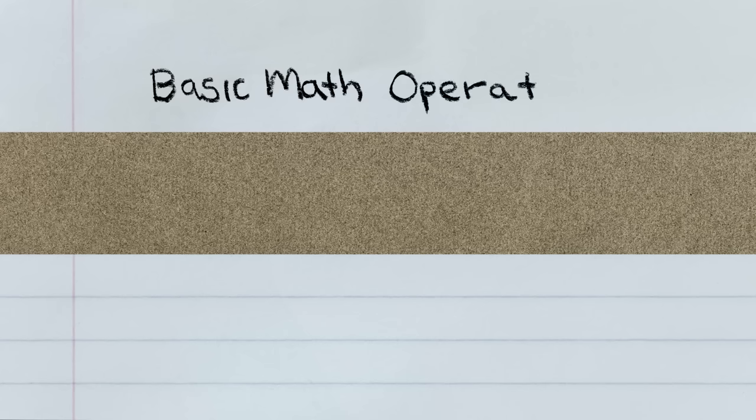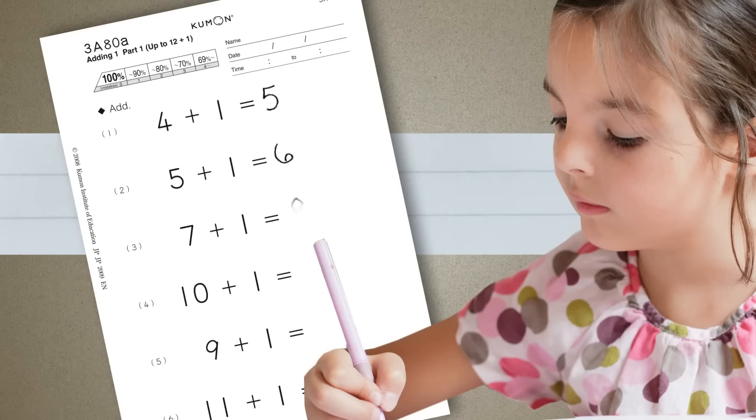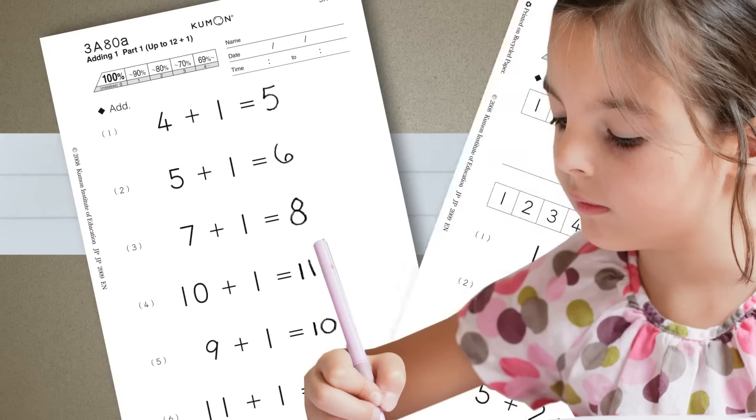Next, the focus shifted to learning the first two basic operations of math, addition and subtraction. Emily first practiced plus one problems, and once she mastered these, she advanced to plus two problems.